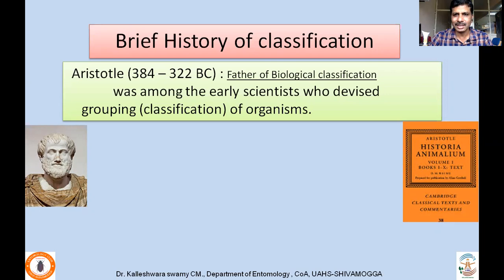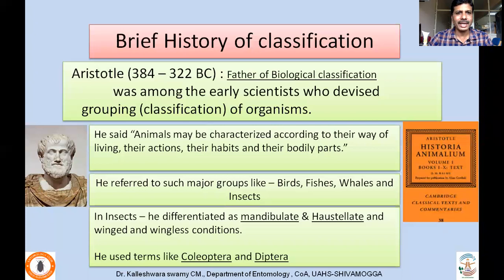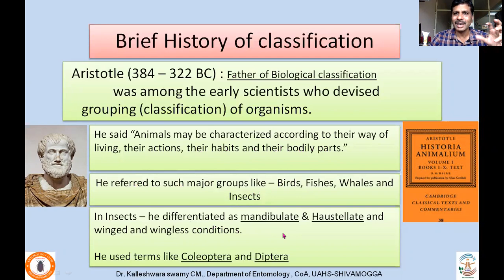Aristotle, who is considered as the father of biological classification, in his publication Historia Animalium, was one of the early scientists who devised grouping or classification of organisms. In his classification, he mentioned that animals may be characterized according to their way of living, their actions, their habits and their bodily parts. He was studying various kinds of organisms and found that there is variation and diversity. He referred to groups like birds, fishes, whales and insects.